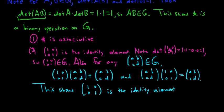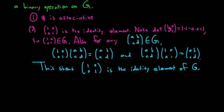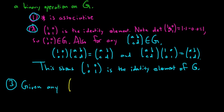The identity element is unique — it's easy to prove that in a group the identity is unique, and likewise inverses are also unique. So we have: 1) star is associative, 2) existence of an identity. Now let's do 3: given any matrix A, B, C, D in G, we have to find an inverse.